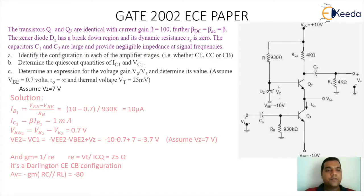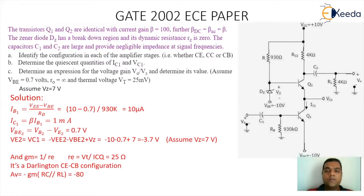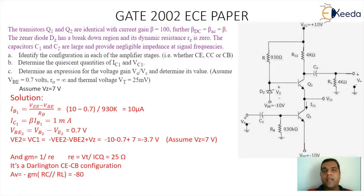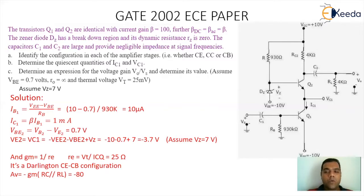Let's start with the solution. We are supposed to find the value of IC1 and VC1. We can apply KVL to the lower loop where RB, transistor Q1, and the negative battery of minus 10V are present. From that, we get IB1 as (VEE minus VBE) divided by RB. Substituting VEE as 10, VBE as 0.7, and RB as 930 kΩ, we get IB1 as 10 microampere. Therefore IC1, which is beta times IB1 where beta is 100, comes out to be 1 milliampere.